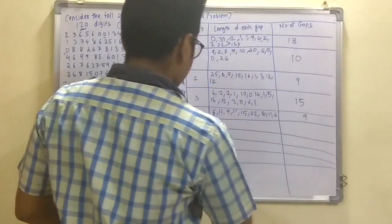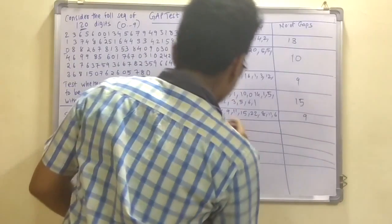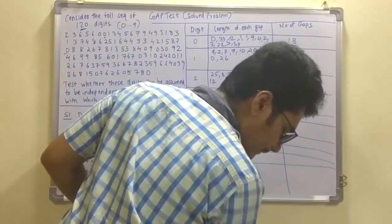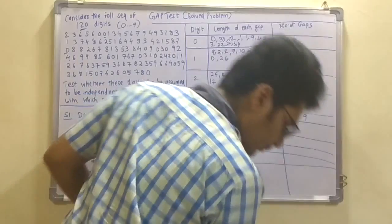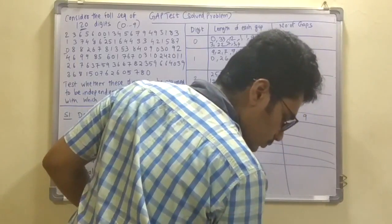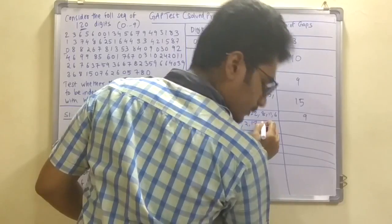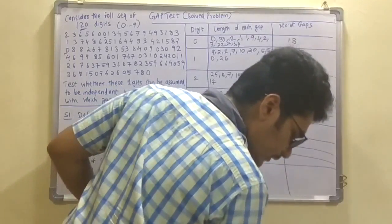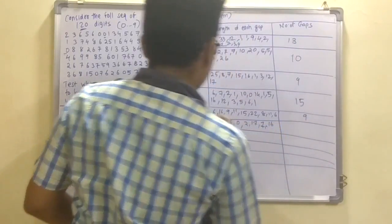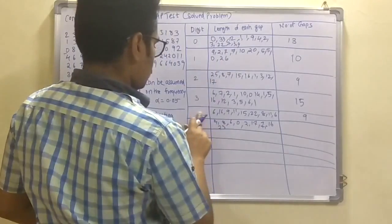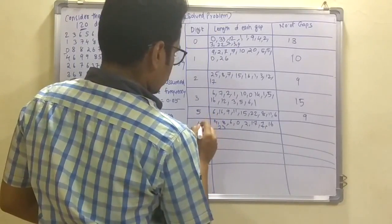For digit 5, the gap lengths are: 4, 8, 4, 8, 6, 0, 2, 17, 7, 16, 23. The total number of gaps for digit 5 is 9. Note: segments around digits 4 and 5 were explained together in the video.